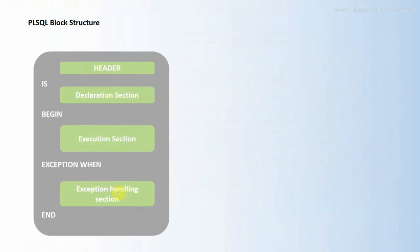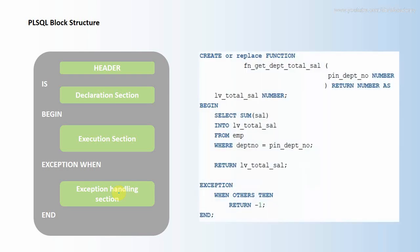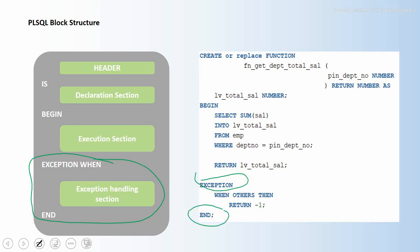Here is the PL/SQL block structure. As we know, the block structure has three sections: one is the declaration section, another is the execution section, and the third is the exception handling section. This is not a mandatory section, but if we want to handle exceptions we need to use it. The exception handling section starts with the keyword EXCEPTION, and whatever exceptions we want to handle, we can handle them as part of this section.